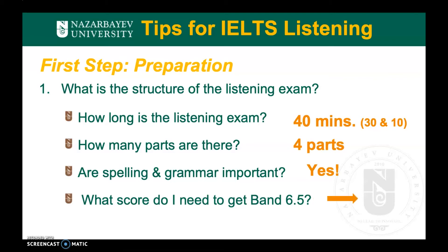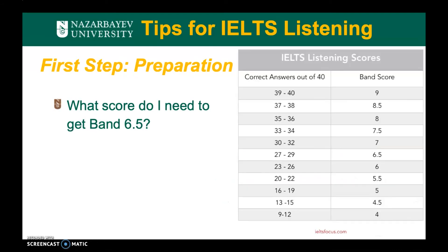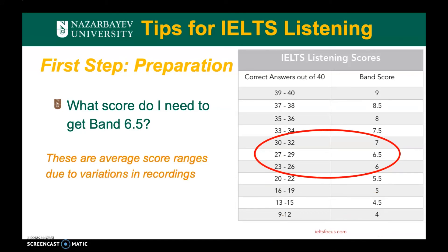What score do I need to get band 6.5? Here is the range of scores for listening. As you can see, 6.5 is 27 to 29 out of 40. There are 40 questions in the test — four parts with 10 questions each. This is a range due to variations in the difficulty level of the recording; if the recording is easy, you may need to get higher points to achieve a higher band.